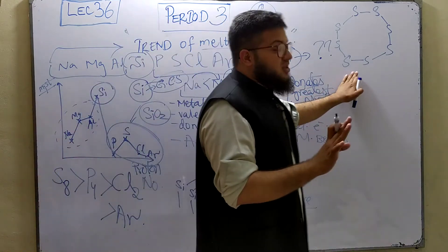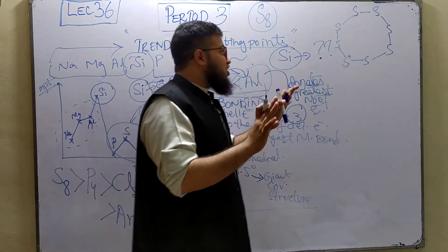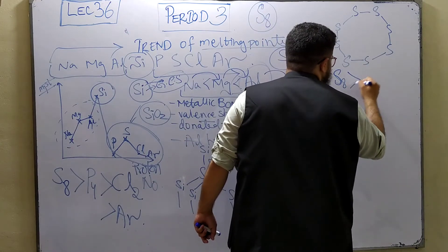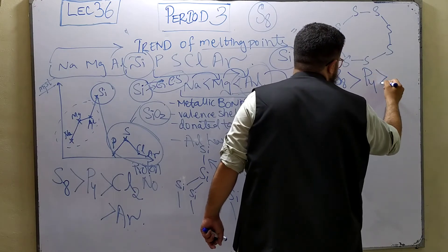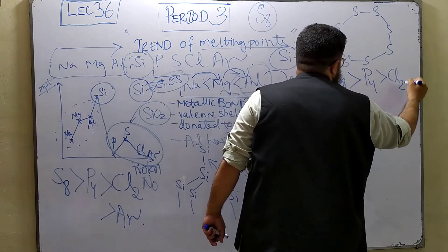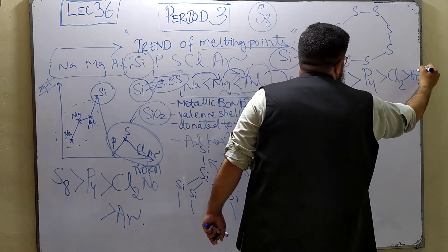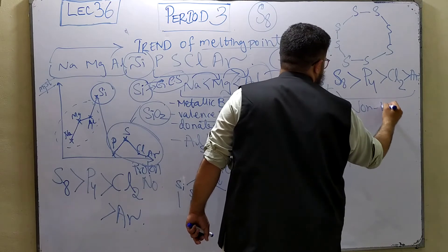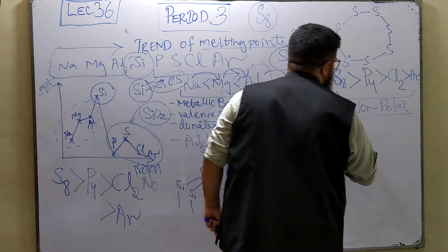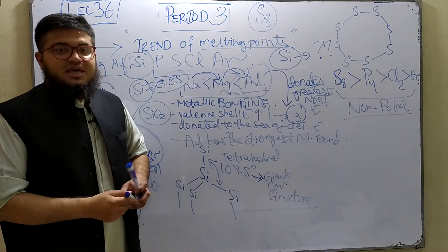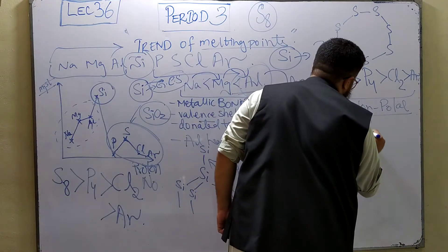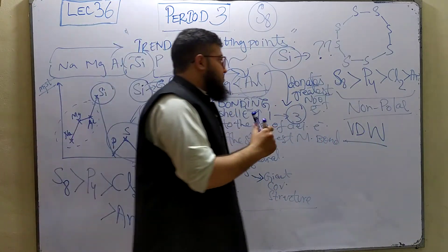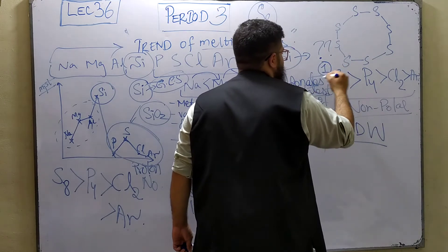Important correction: it's not the covalent bonds on which the melting point depends for sulfur, phosphorus, chlorine, and argon. These are non-polar compounds, so it is the van der Waals forces which are responsible for the melting points in these elements. The first mark is for this statement about van der Waals forces.